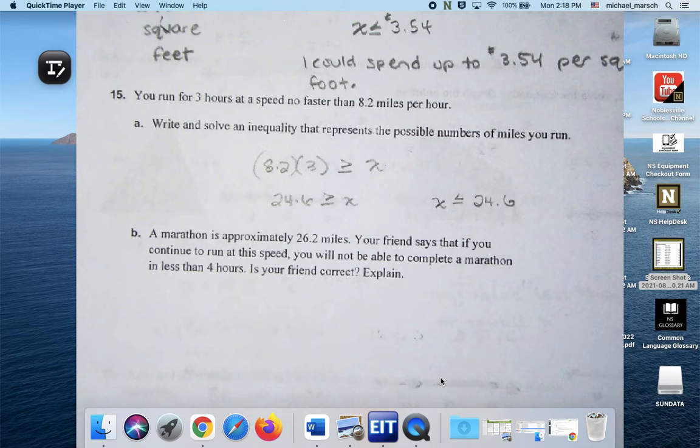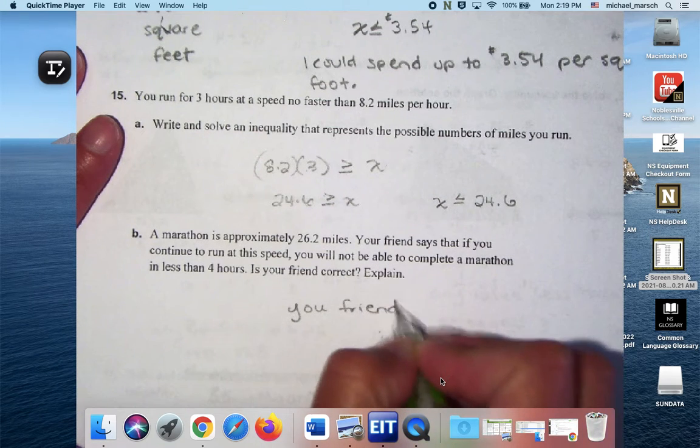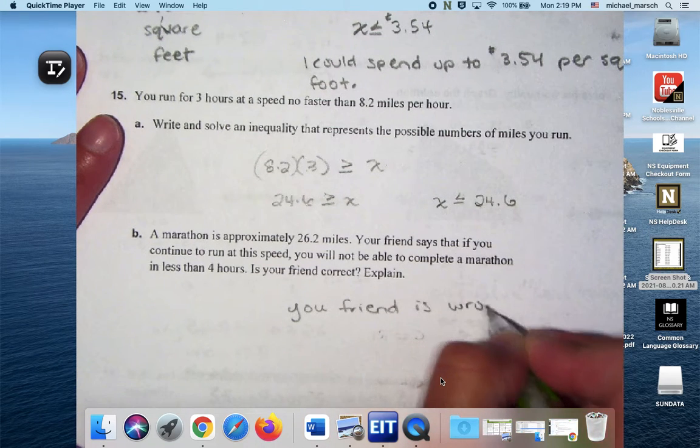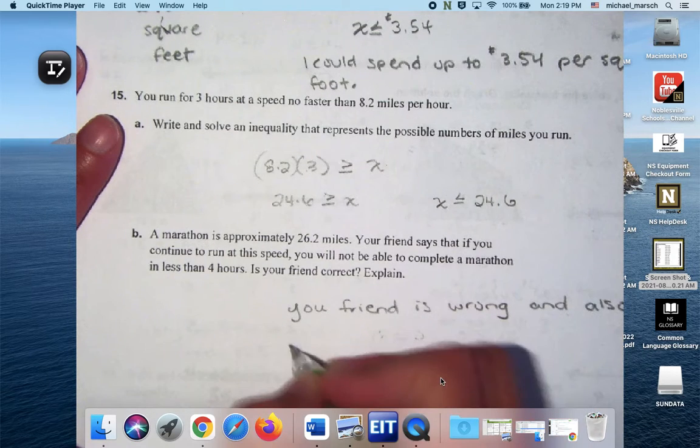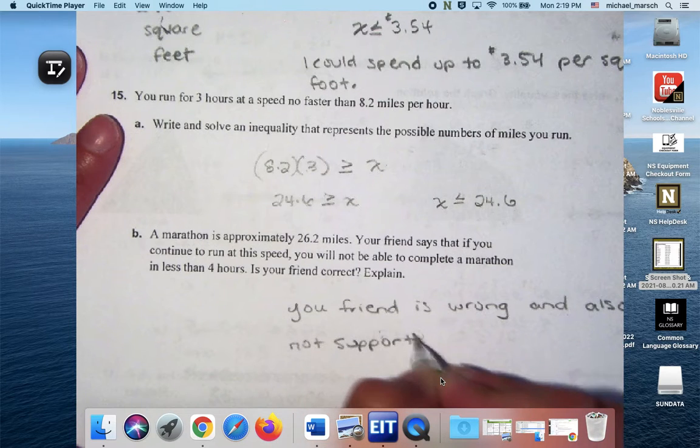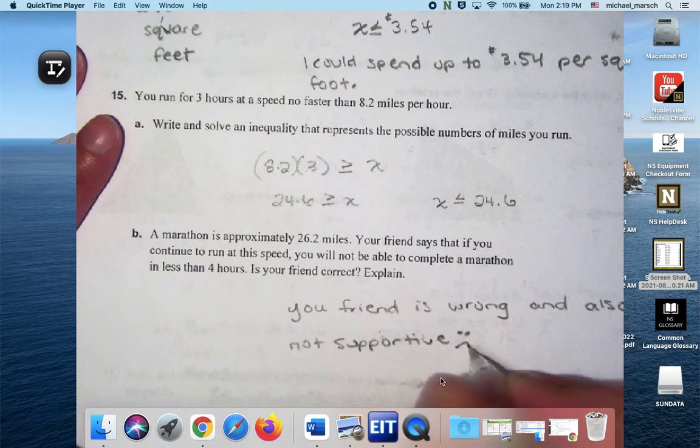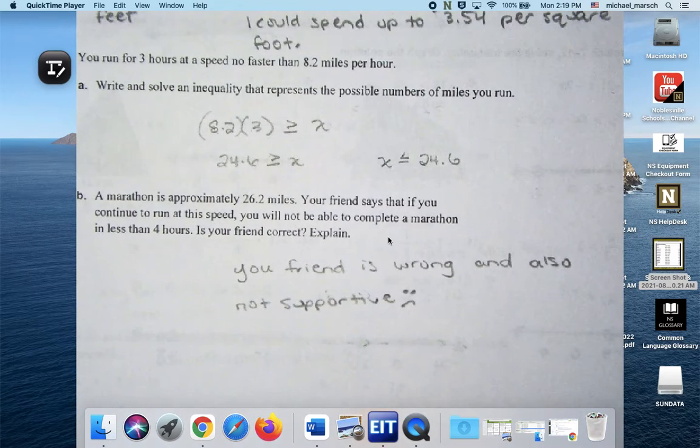So then for a marathon, it's 26.2 miles. Your friend says if you continue to run at that speed, you will not be able to complete it in less than 4 hours. Is your friend correct? So if you can run this in 3 hours, would you be able to run about 2 more miles in 4 hours? I mean, barring any major injuries, I think you'd be okay. Yeah? So your friend is wrong. You don't have to put that part, but it sounds very unsupportive to be like, you're never going to do it. Doesn't sound like a good friend at all. We finished.